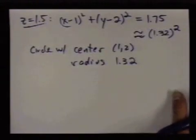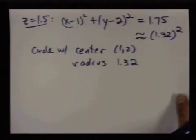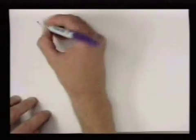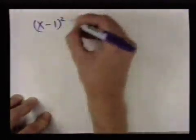Well, so we've seen setting z equal to various different values, we get these circles. And in one case, we get a point. So now let's try to graph that in three dimensions.